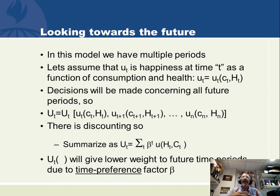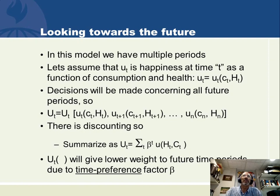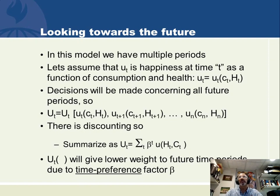We give lower weight to future time periods due to time preference beta. Right off the bat, you could apply this model to why teenagers smoke and drive too fast — they've discounted future effects on their body. They believe the health shock from smoking today will hit them in 50 years, which is heavily discounted, while the joy of smoking the cigarette is immediate. That's just the start of the predictions from the model.